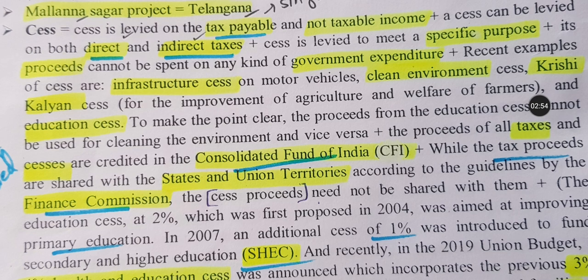If the cess is for education, you can use it for education. If it is for health, it goes to health; for road infrastructure, it goes to road infrastructure, etc. Its proceeds cannot be spent on any other government expenditure. Recent examples of cess include: infrastructure cess on motor vehicles, clean environment cess, Krishikalyan cess related to farmers' welfare, and education cess.